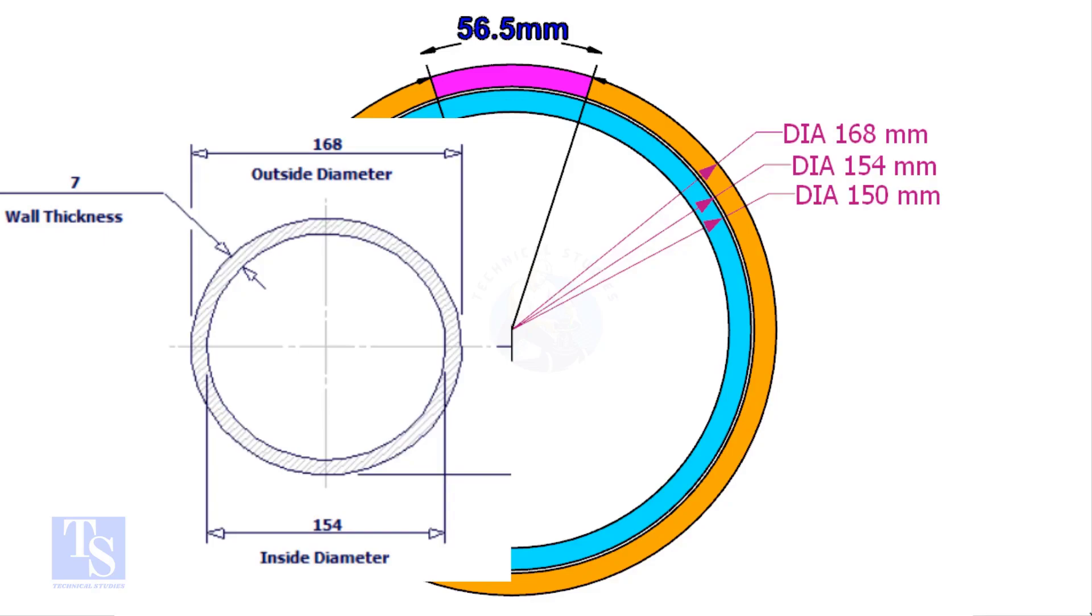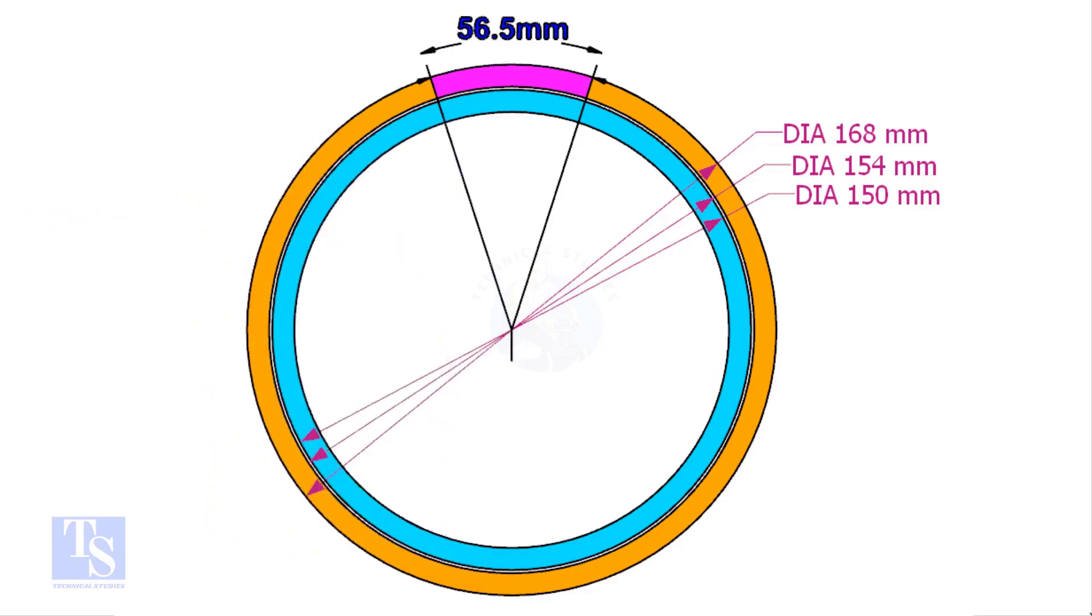The ID of a 6 inch 40 schedule pipe is 154mm. The OD of the clamp shall be 4 to 5mm less than the pipe ID. This clamp OD is 4mm smaller than the ID of the 6 inch pipe.